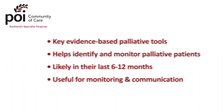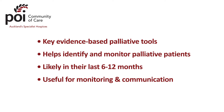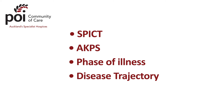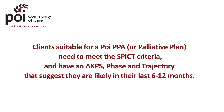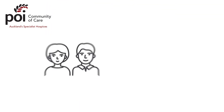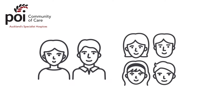The palliative tools. There are some key palliative tools we suggest to help identify and monitor palliative patients. These are the SPICT, AKPS, phase of illness and disease trajectory. These tools should be used together. Clients suitable for a POI palliative plan or PPA need to meet the SPICT criteria and have an AKPS, phase and trajectory that suggest they are likely in their last 6-12 months of life. The tools are also useful for ongoing monitoring of clients and communicating with them and their whānau around what to expect in the future.